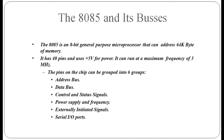The 8085 is an 8-bit general-purpose microprocessor that can address 64 kilobytes of memory. It has 40 pins and uses +5 volts as a power supply. It can run at a maximum frequency of 3 MHz. The pins on the chip can be grouped into six groups: address bus, data bus, control and status signals, power supply and frequency, externally initiated signals, and serial input/output ports.